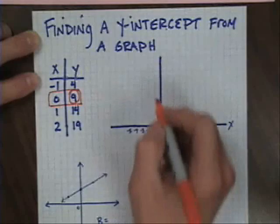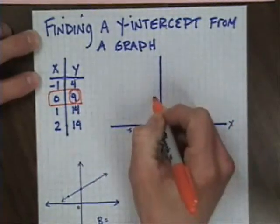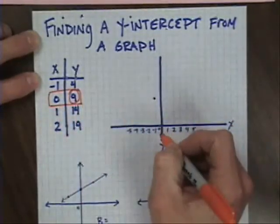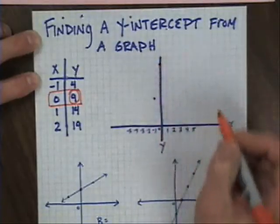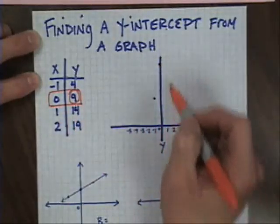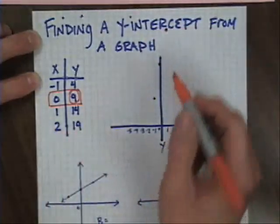If we were to graph this, just to demonstrate this, negative 1, 4 is right here, 0, 9 is about right here, and 1, 14 would be over 1 and up 14, though I'm not going to have room to graph my last piece.